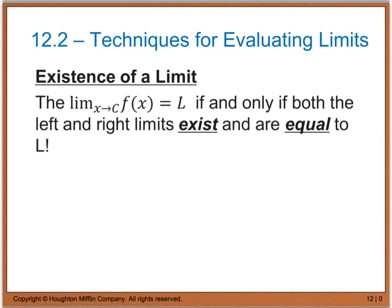And the limit as x approaches 0 from the right of the absolute value of x divided by 4x will actually give us positive 1 fourth. Please double check this on your graph or your table. And we need to reiterate the fact that the limit as x approaches c of f of x will equal the limit L if and only if both the left and right limits exist and they have to be equal to L. So if your left limit does not equal the right limit, the limit as a whole does not exist.